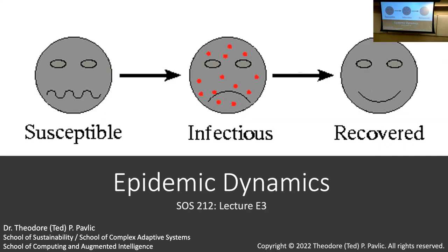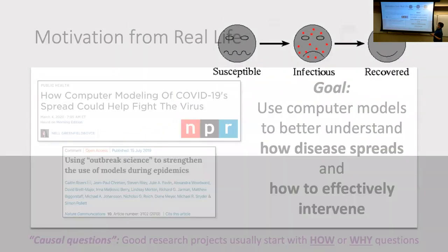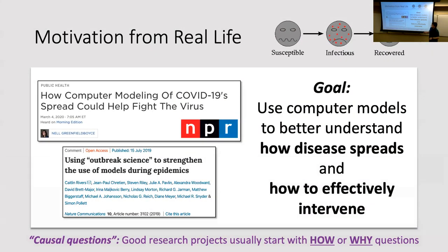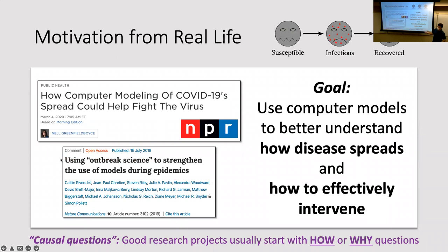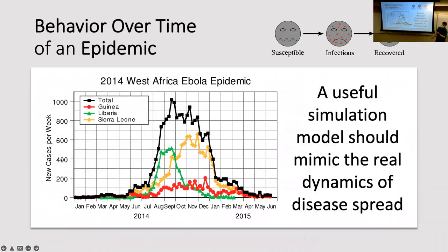This is a relatively recent article from 2020, back at the start of the pandemic, where NPR was talking about how in complex systems, computer models can be very beneficial for scenario planning. That's what they're talking about here — outbreak science was largely a science of using computer models to try to understand how these things go over time.